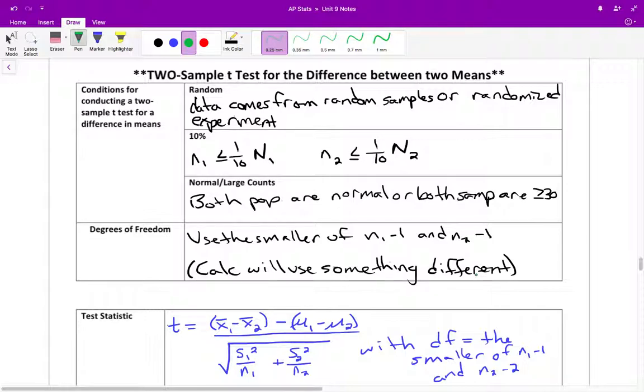And then for degrees of freedom, here's the one that's just a little tricky because there are two separate values that you could use for degrees of freedom. So you will use the smaller of n1 minus 1 and n2 minus 1. Whichever one is smaller, that's the one you go with. Now your calculator is going to use something different. So don't worry about that. Just focus on for degrees of freedom, which one would be smaller.